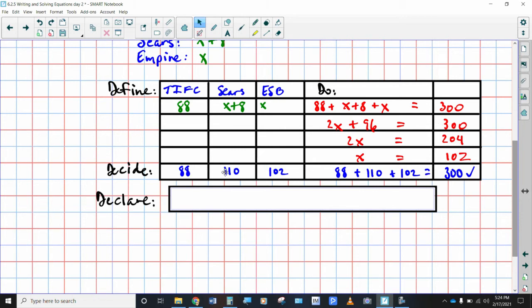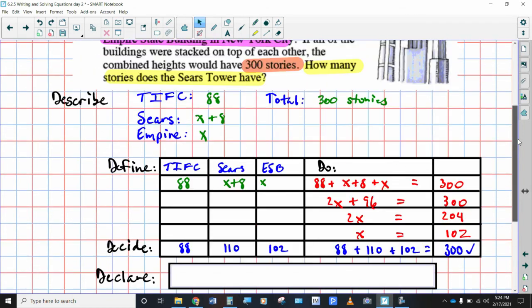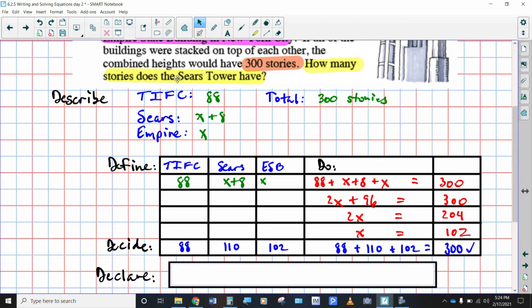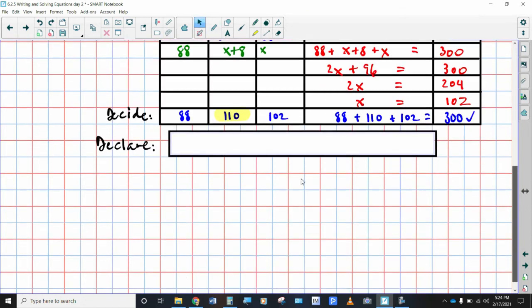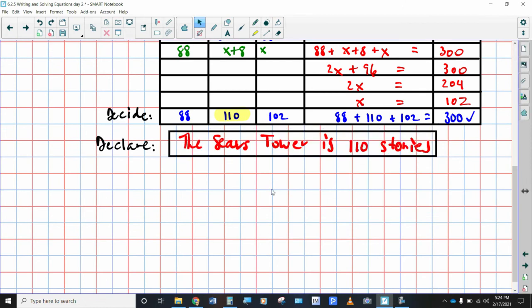Now what do we have to declare? We have to declare how many stories does the Sears Tower have? So we are going to go to this piece of information right here and declare that as our answer. The answer is the Sears Tower is 110 stories tall.